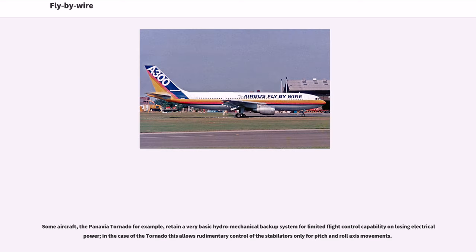Some aircraft, the Panavia Tornado for example, retain a very basic hydromechanical backup system for limited flight control capability upon losing electrical power. In the case of the Tornado, this allows rudimentary control of the stabilators only for pitch and roll axis movements.